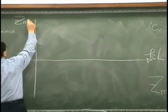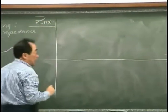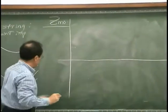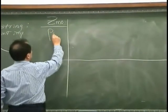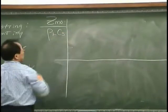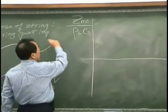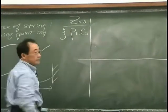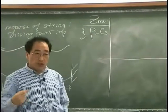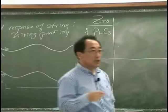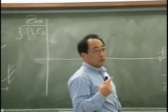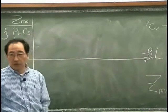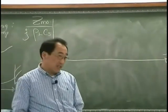Z at M=0. I would like to normalize this driving point impedance with ρLCS and J. I just want to see the magnitude because there's only a phase difference of π/2 or J. So essentially we are drawing cotangent KL.